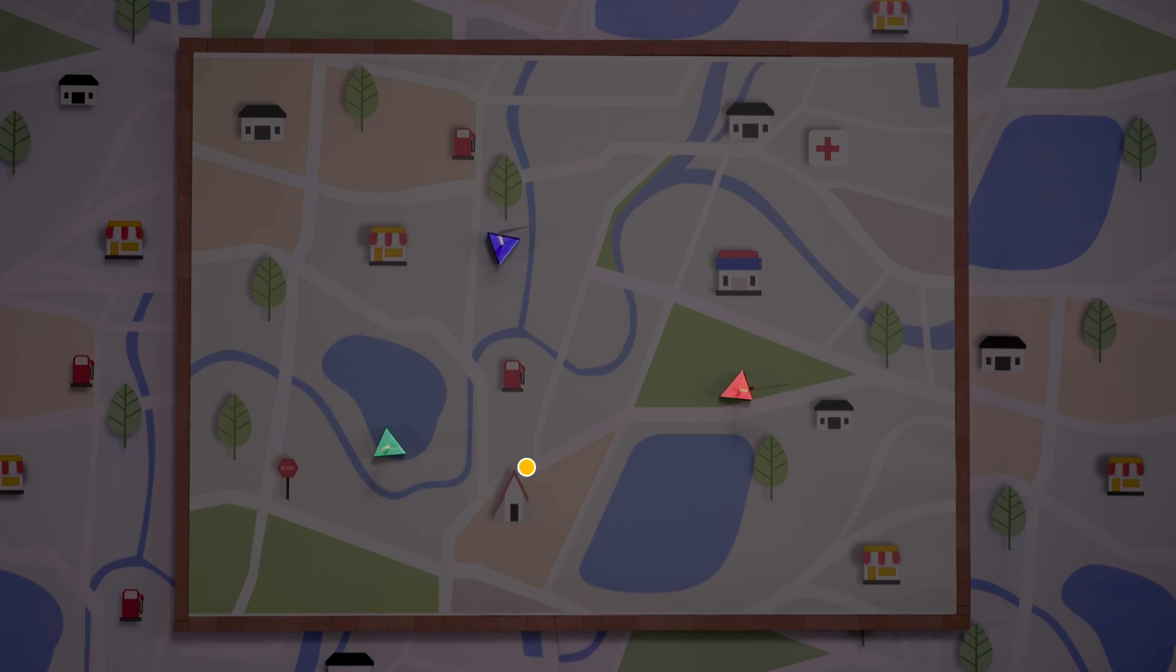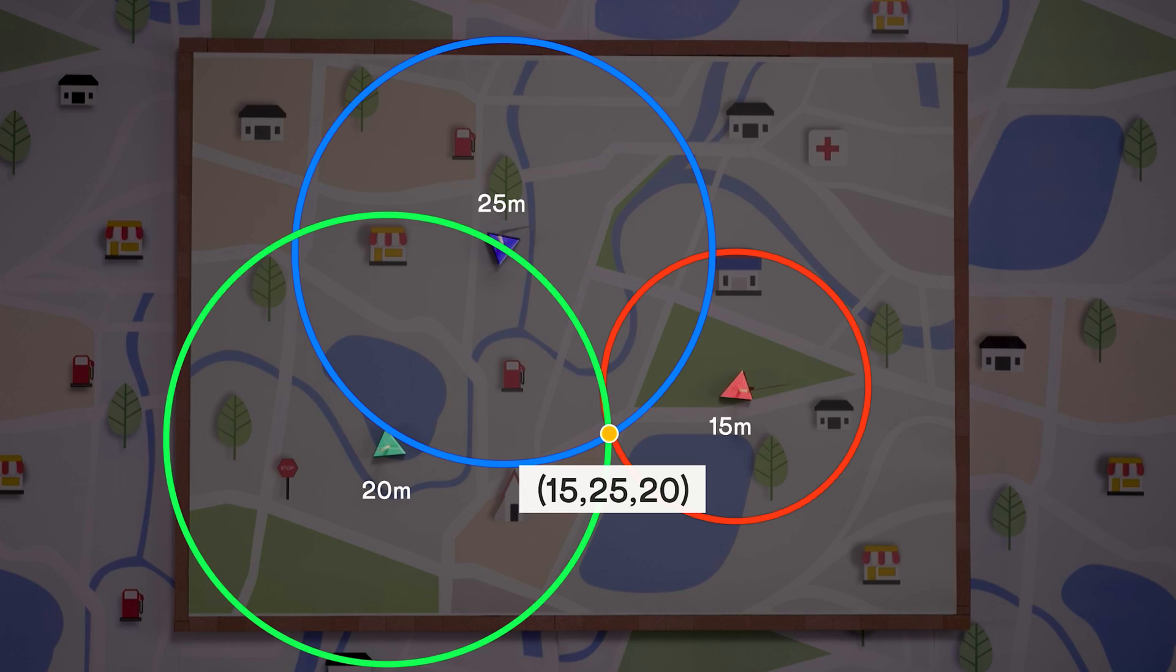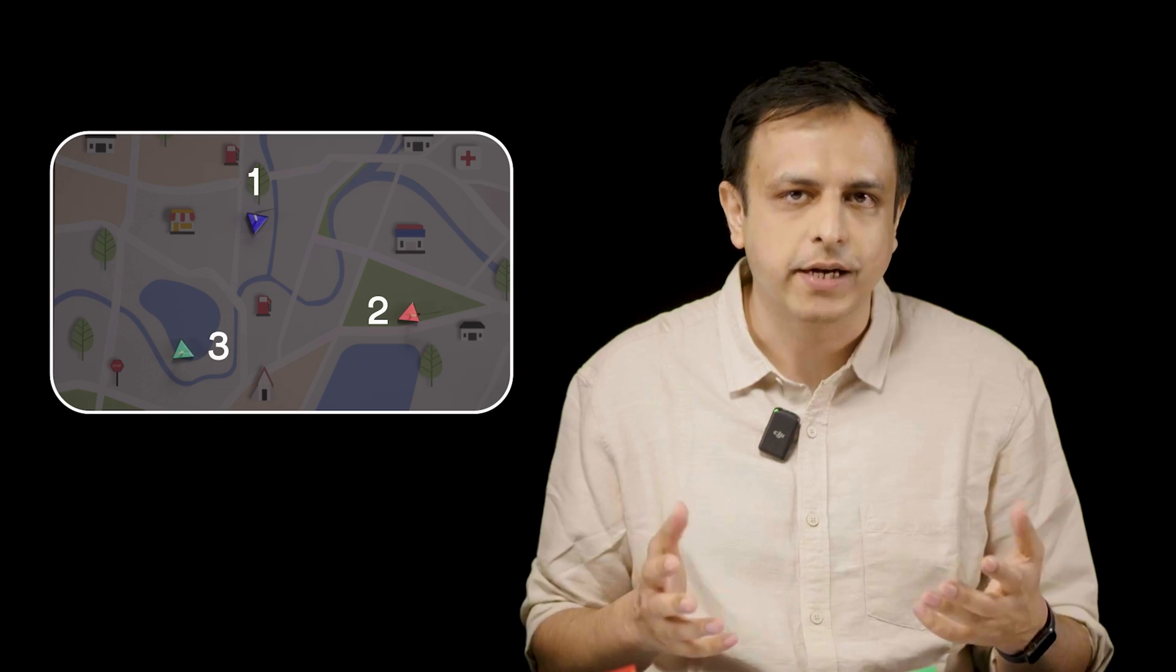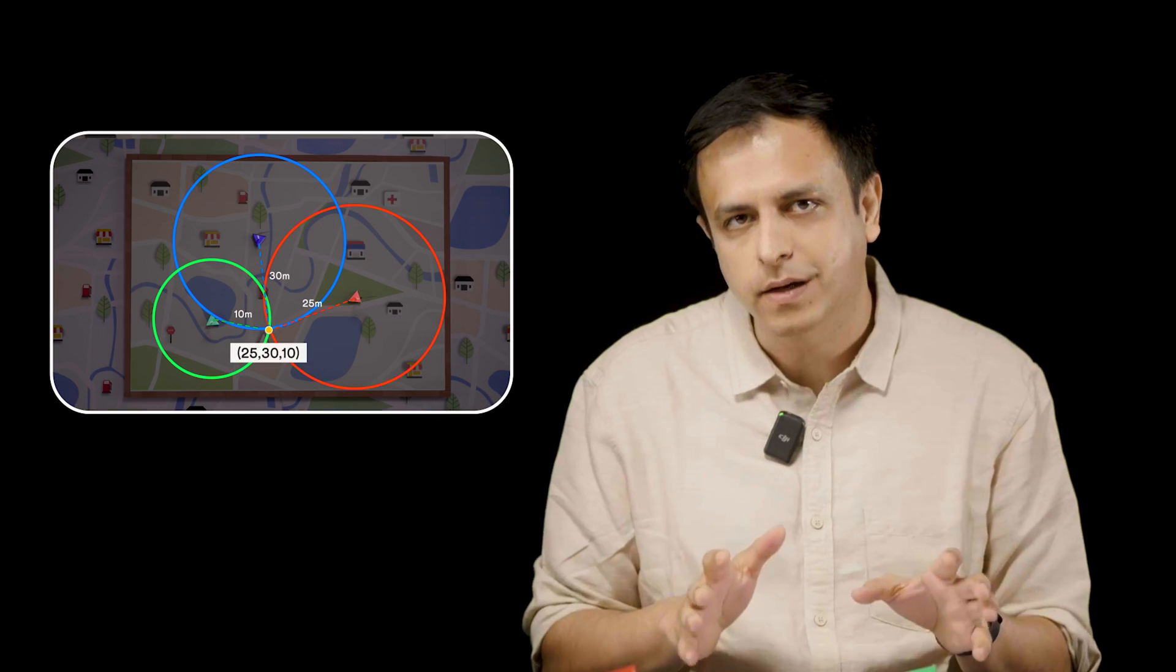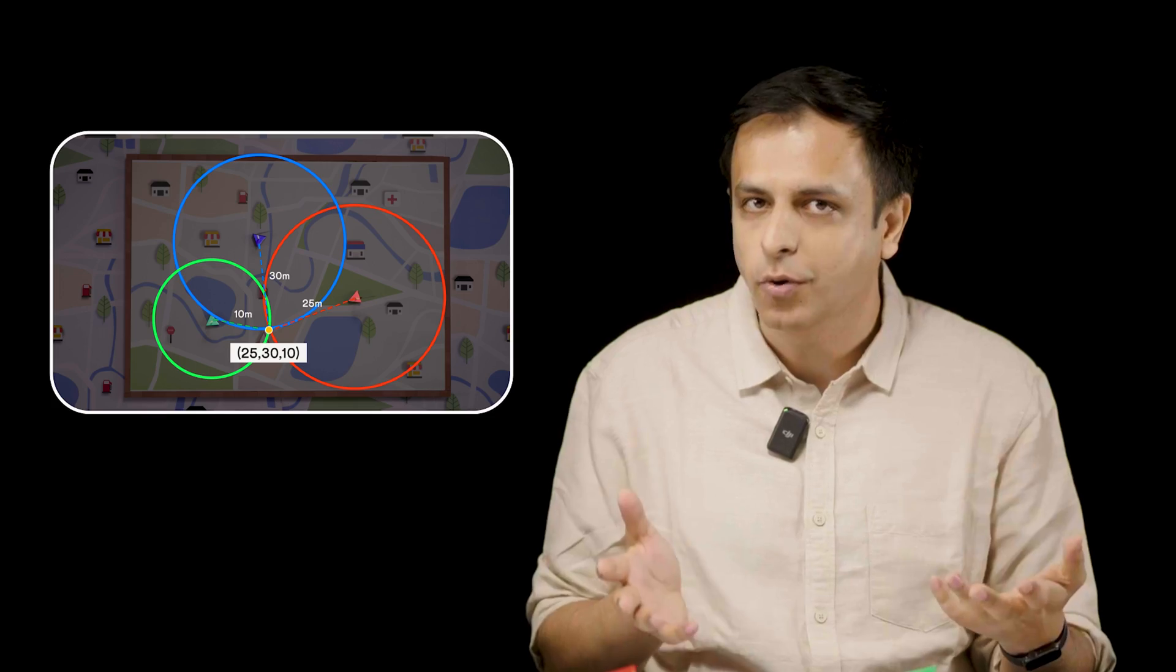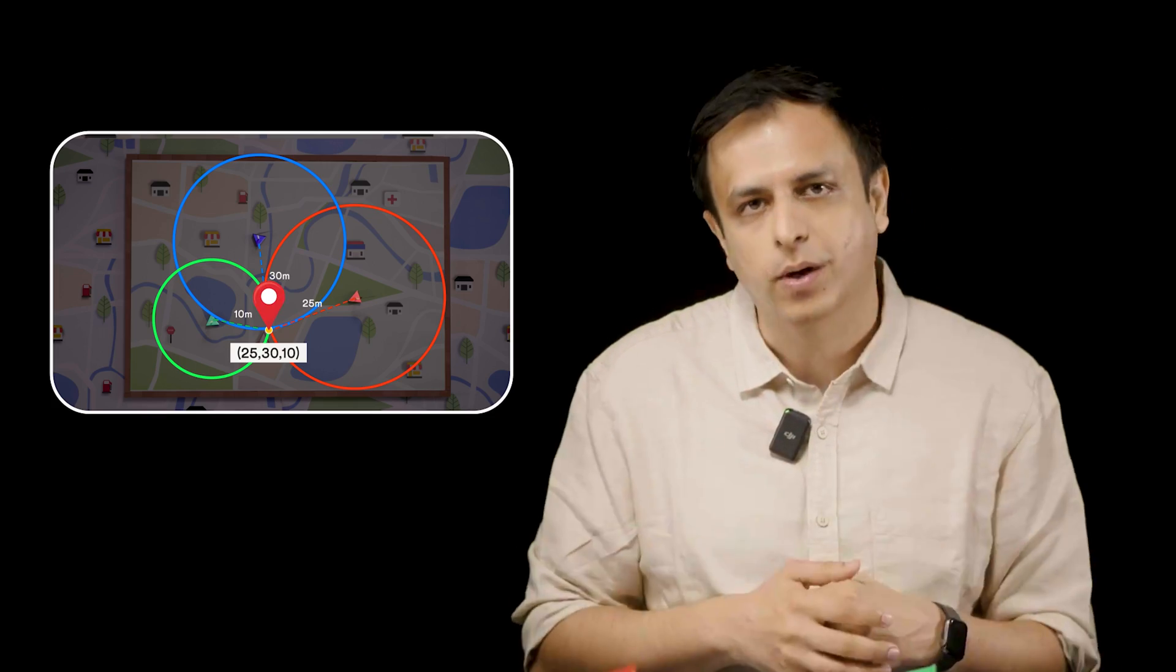Like this point has the coordinates 25, 30, 10, and the point with coordinates 15, 25, 20 must be this one. So if we have three reference points, and I give you a set of three numbers, which tell my distance from each point, you can always locate me in this 2D world.